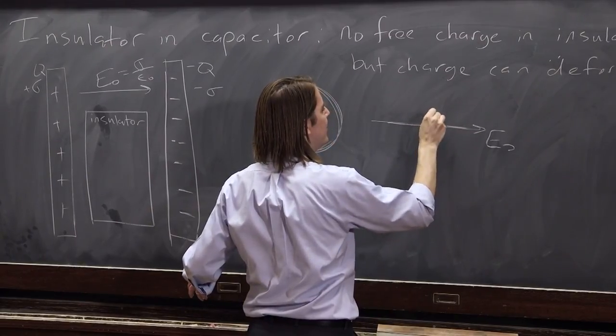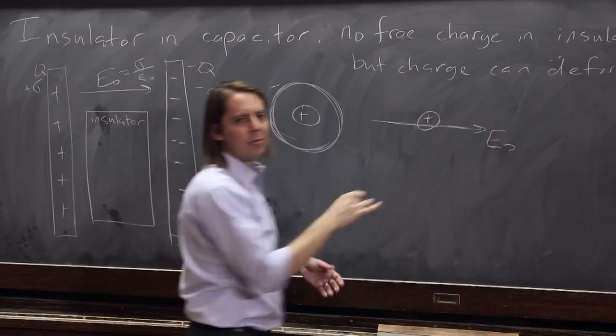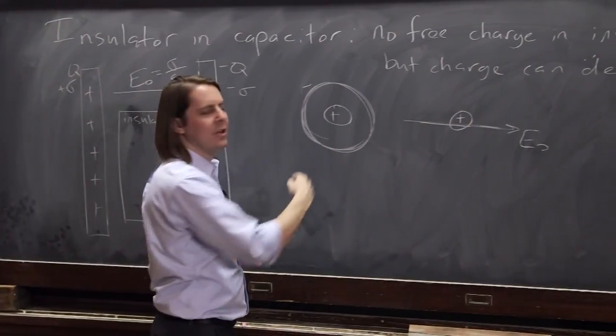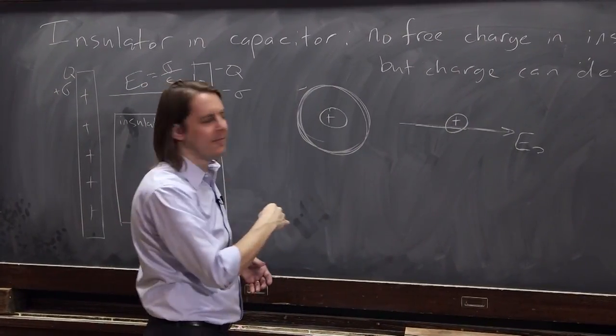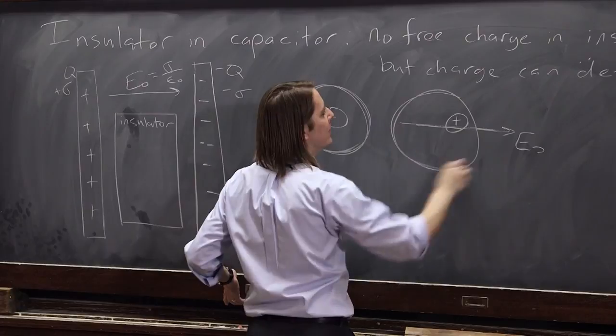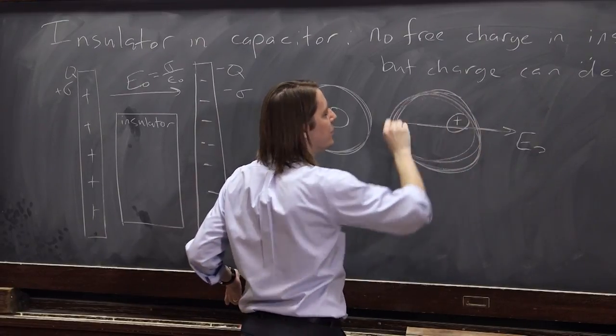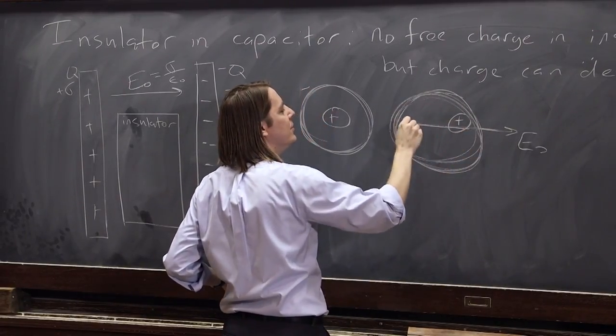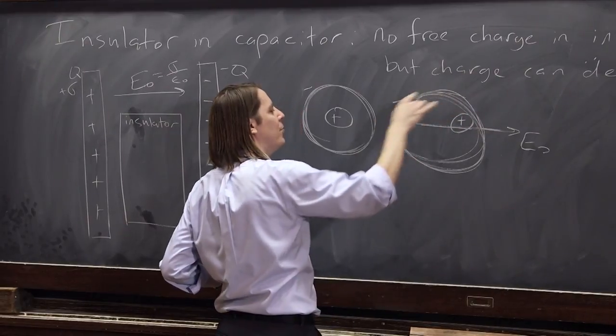then what's going to happen is if the nucleus sits here, the electrons are real light. They feel a force to the electric field. They want to go to the left. They can't completely come off because they're still attracted to each other, but this electric field is deforming them and putting the electrons more over here.